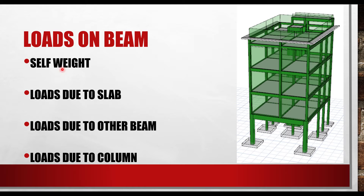Loads due to slabs can come in two forms. A uniformly distributed load is common in one-way slabs and cantilever slabs. A uniformly varying load is common and dominant in two-way slabs. We are going to look at an example to understand this clearly.